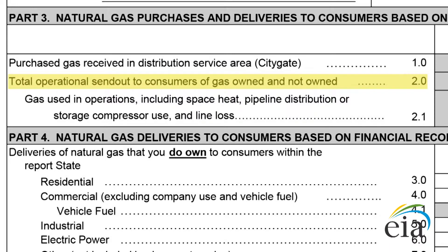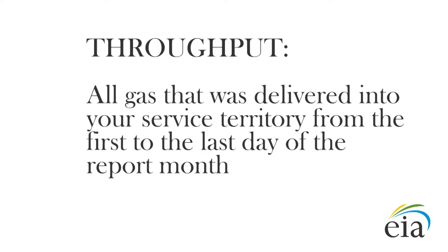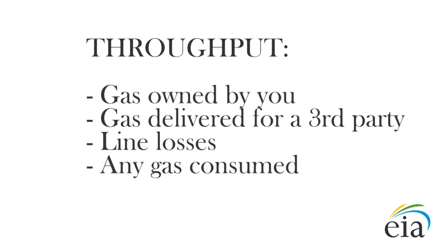Line 2.0 asks for total operational send-out of gas owned and not owned that is intended to be delivered to consumers during the calendar month. You might know this as throughput. This represents all gas that was delivered into your service territory from the first to the last day of the report month. This includes both gas that is owned by your company and gas you are delivering for a third party. It should include any line losses and any gas consumed within your company operations.